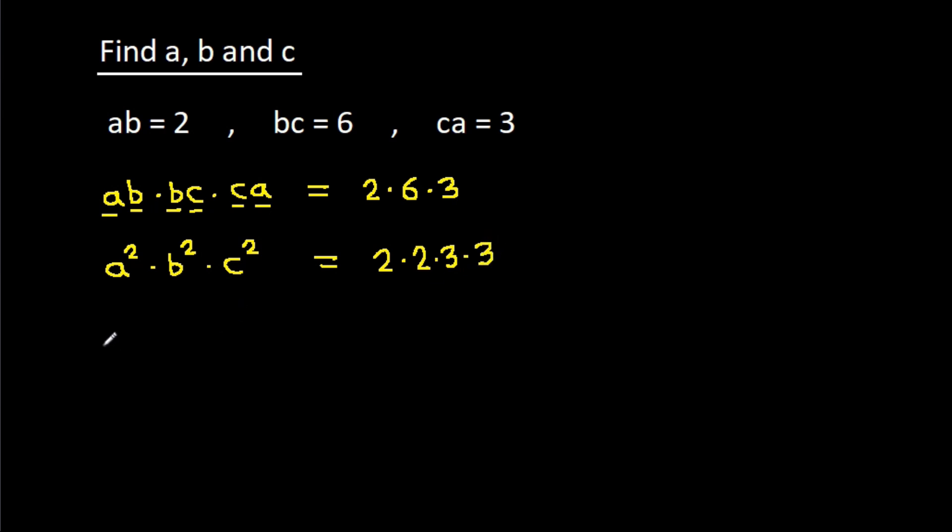And it is A squared times B squared times C squared is equal to 2 times 2 is 2 squared, times 3 times 3 will be 3 squared.